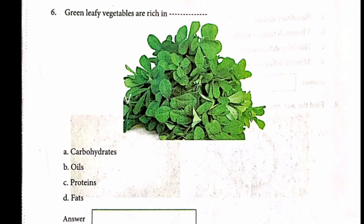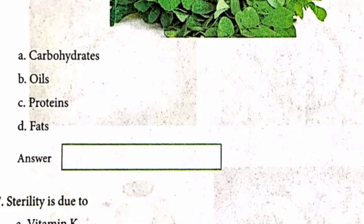Question number 6. Green leafy vegetables are rich in iron and vitamins. Question number 7. Sterility is due to deficiency of which vitamin? The answer is B. Vitamin E.